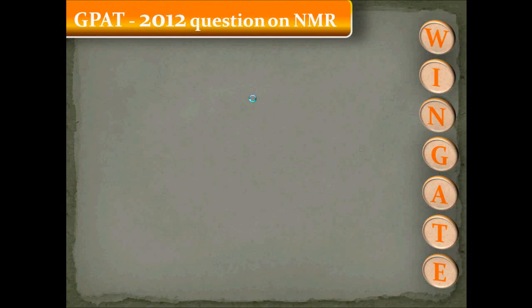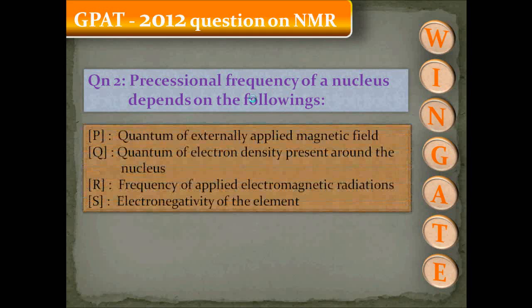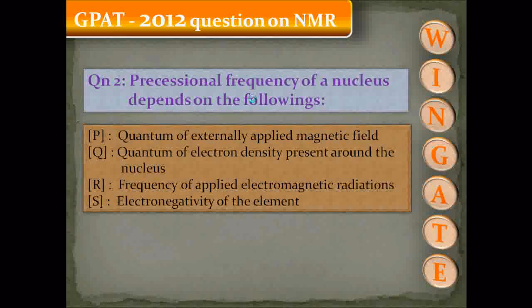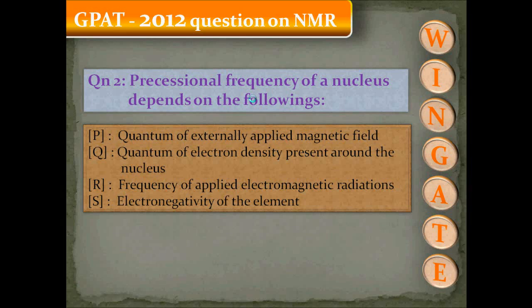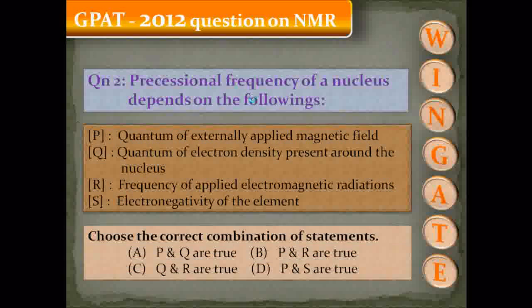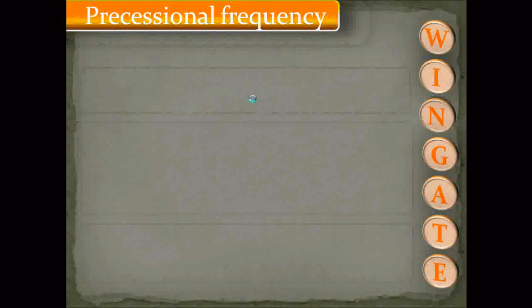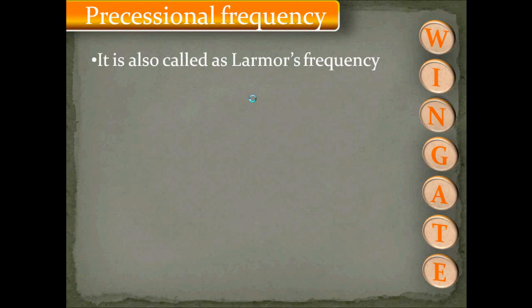Now let us go to another question from GPAT 2012. The precessional frequency of a nucleus depends on: P — the quantum of externally applied magnetic field; Q — the quantum of electron density present around the nucleus; R — the frequency of the applied electromagnetic radiations; and S — the electronegativity of the element. Choose the correct combination of true statements.